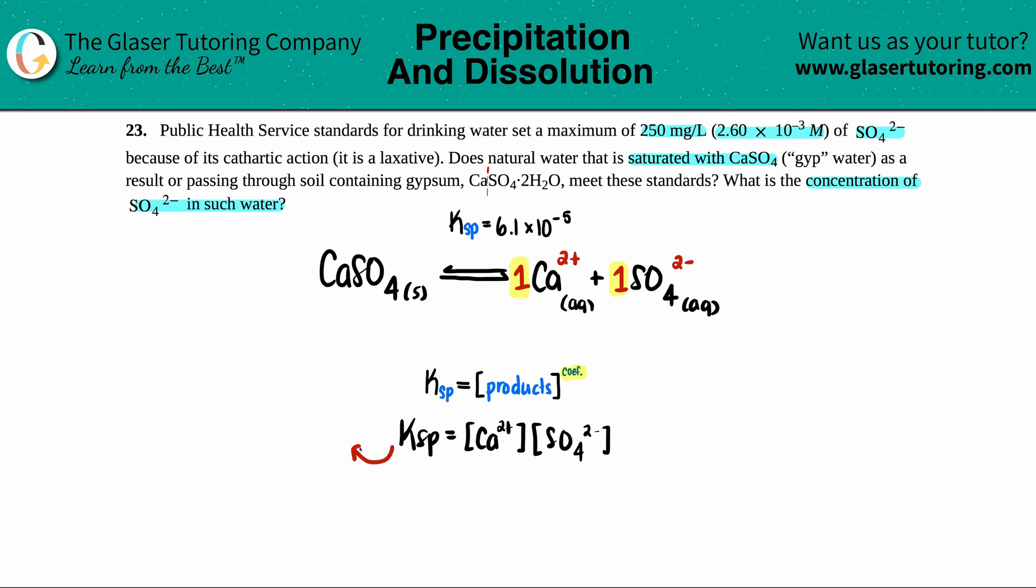So we know that the Ksp from the back of the textbook is 6.1 times 10 to the negative fifth. But I don't know what the concentrations of calcium and sulfate are. So that's when we're going to make up variables. We like to use x. So I say, I don't know what the concentration of calcium is. I'm going to label it as x.